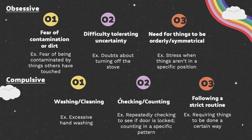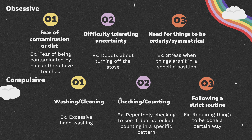Within the obsessive subtype, there are a few common themes. The first is a fear of contamination or dirt, with a common symptom being an irrational fear that touching something others have touched is contaminated. The second common theme is difficulty tolerating uncertainty, with a common symptom of frequent doubt that something has been done, like turning off the stove. Another common theme is the need for things to be done in an orderly or symmetrical way, with a common symptom involving distress when something isn't in a specific position.